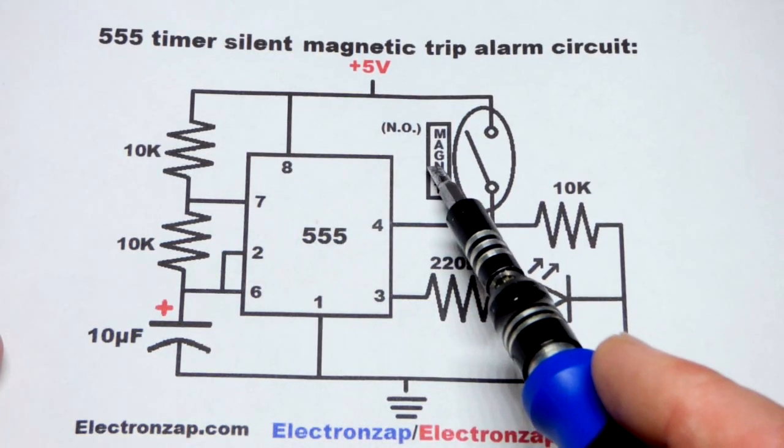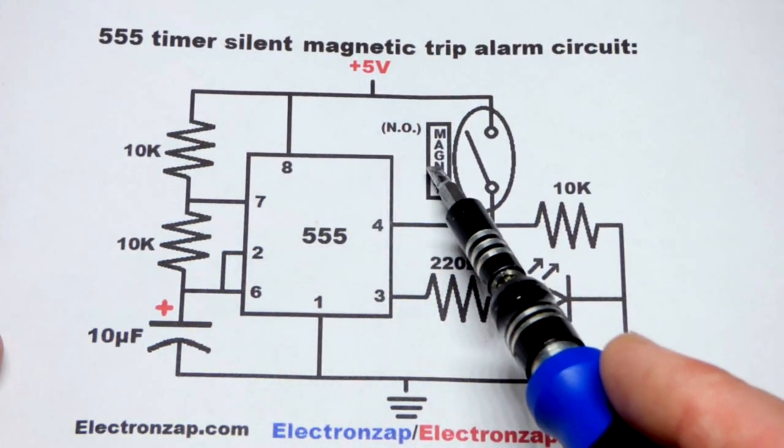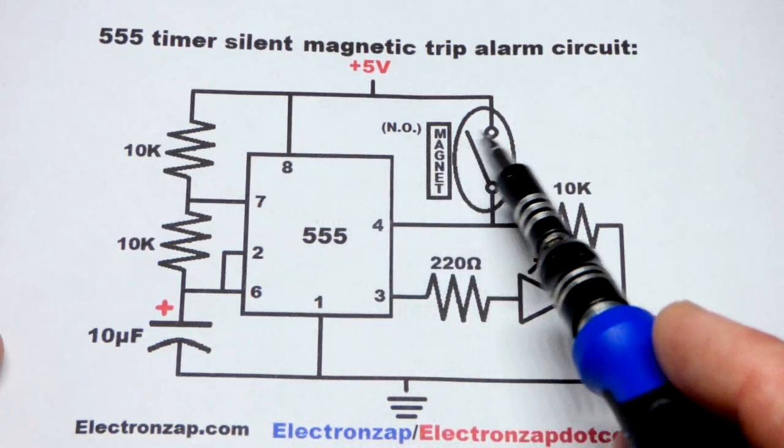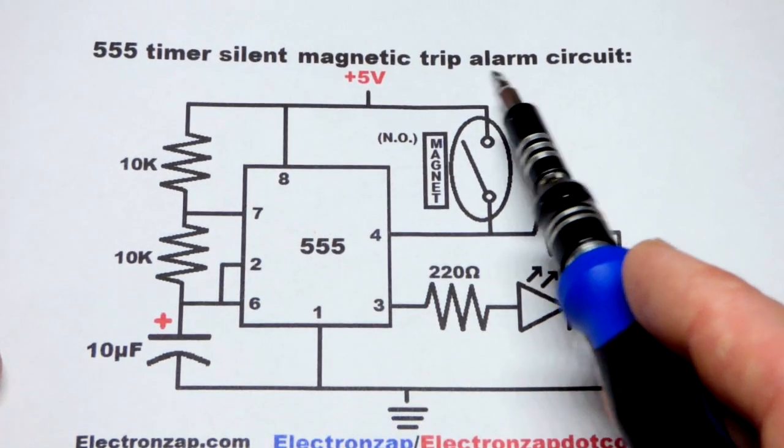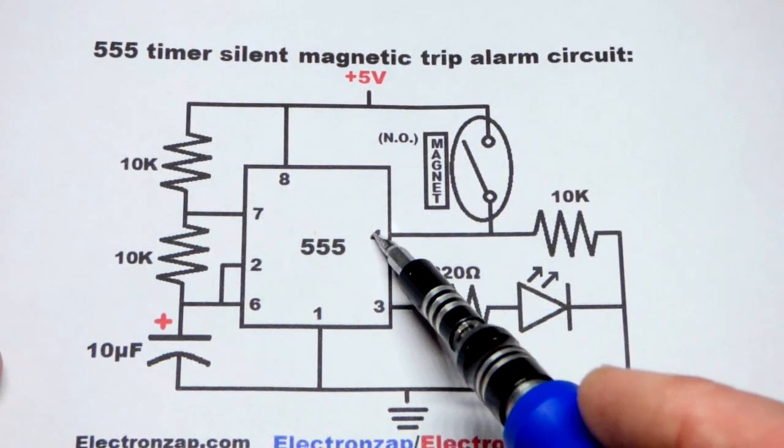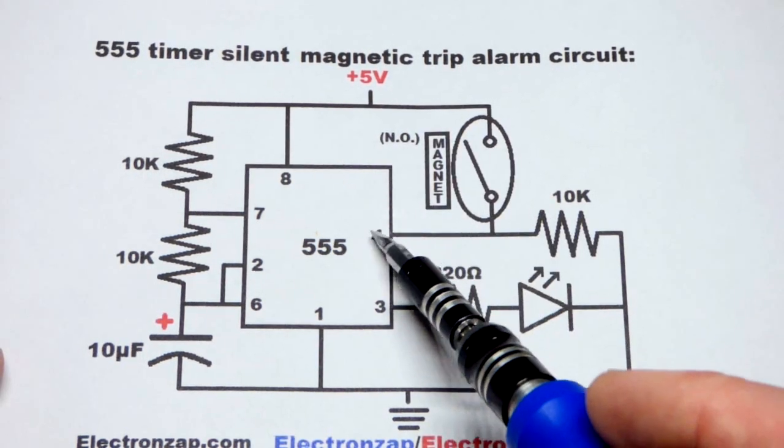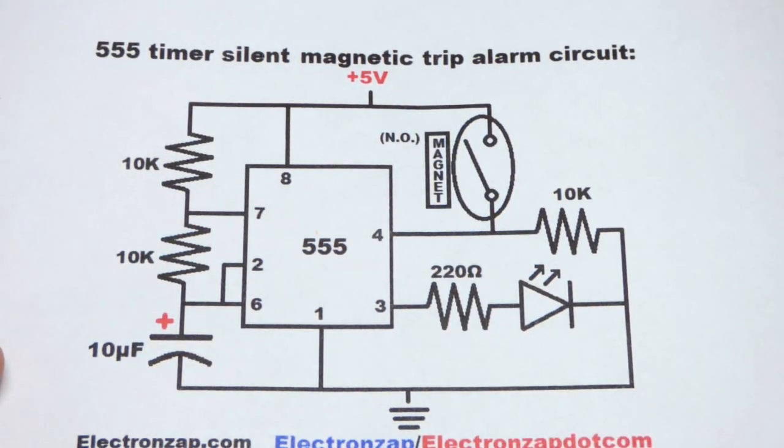When we remove the magnet, maybe we've got a string tied to it or it's to a door or whatnot. I'm just going to physically move it with my hand. But when you move the magnet, then the switch will close. That's when we'll have our flashing LED alarm. Because now pin 4 will have a direct connection to the 5 volt power supply, which is what it always does when it's working normally in A-stable mode.